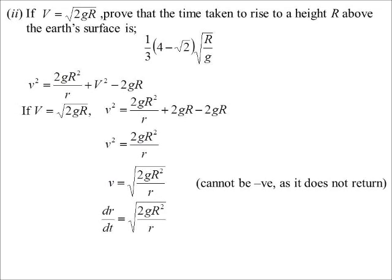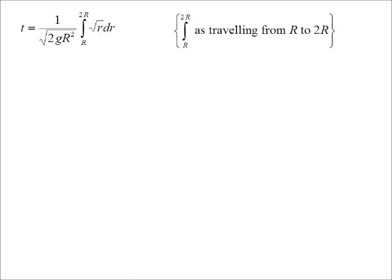So dr/dt is equal to that square root. Why did I choose dr/dt? I'm trying to now get a link between displacement and time. So dt/dr, turn it upside down, integrates. So our time will be, I'm going from the Earth's surface, that was when x was equal to capital R, to a height R above. So it's another R. So I'm going from R to 2R.